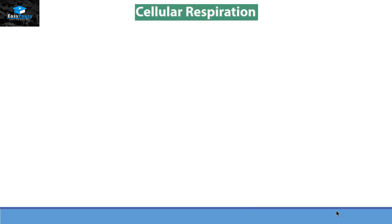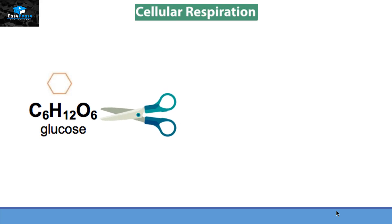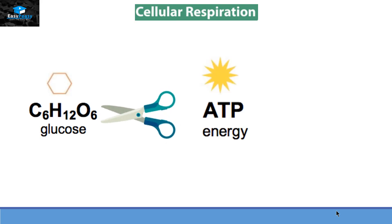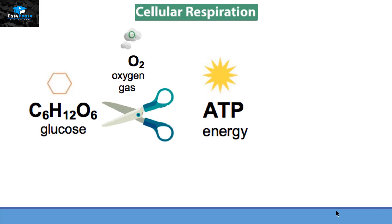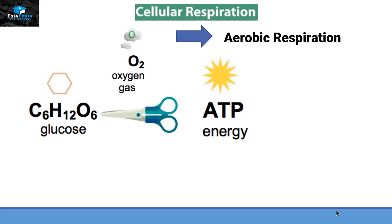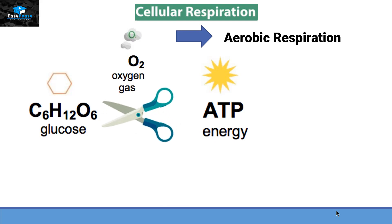So the summary of cellular respiration is that glucose is going to degrade itself into energy. This can be done with the help of oxygen, and that type of respiration is called aerobic respiration.